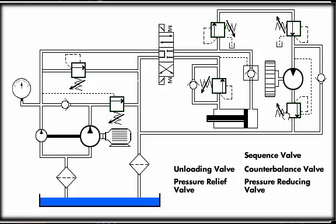Brake Valve: The brake valve serves two purposes. It prevents a load from over-speeding the motor, and when the directional control valve is centered, it brings the motor to a stop at a controlled rate of speed.